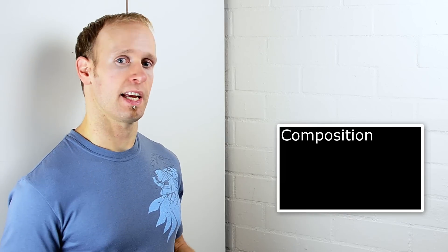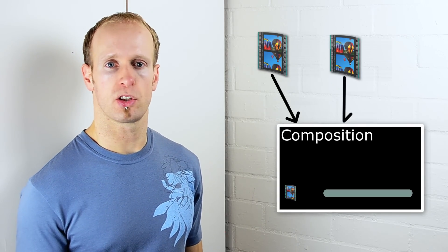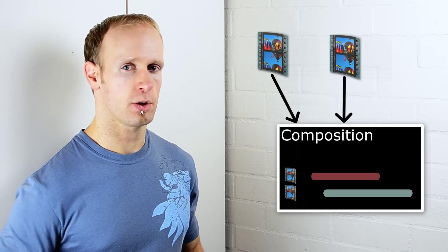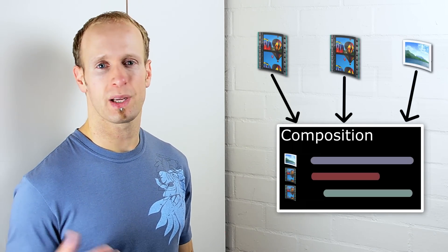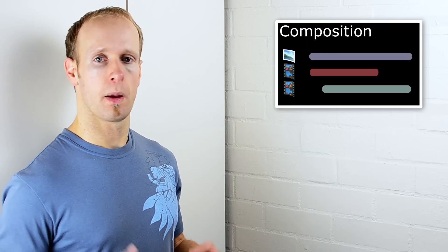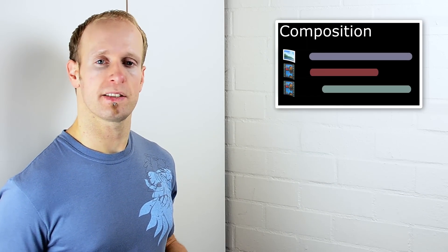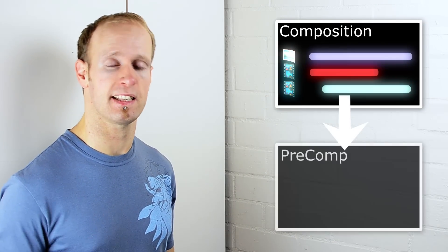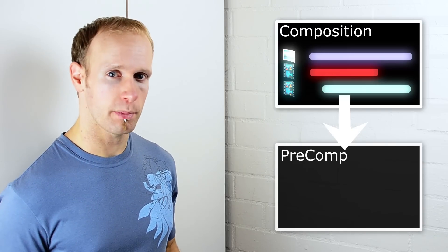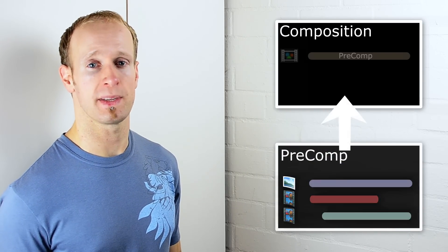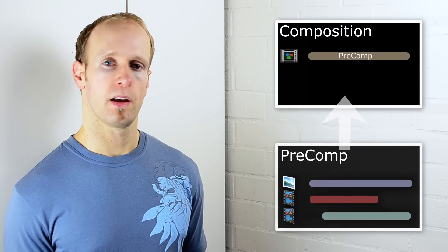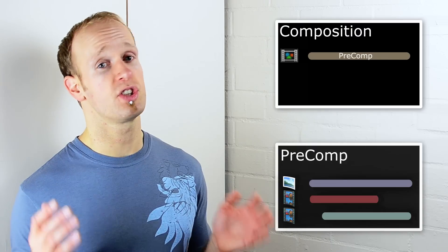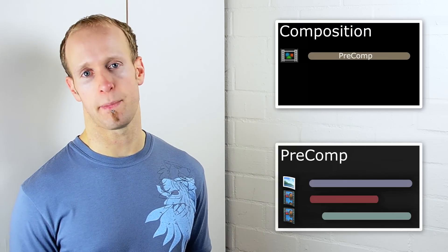A composition is basically a container for one or more layers. Whenever you create a clip in Adobe After Effects, you have to create a composition first because layers cannot exist outside of a composition. Pre-composing means to take a number of layers in your current composition and nesting them. This creates a new composition and places all of your individual elements inside of it. An obvious reason to use compositions is just to keep things neat and manageable.